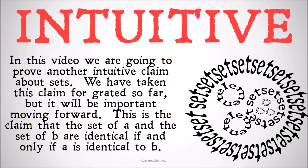In this video we're going to prove another very intuitive claim about sets that we have taken for granted so far. We've talked about our brackets in this way without ever proving that this is the case. This is the claim that the set of A and the set of B are identical if and only if A is identical to B.